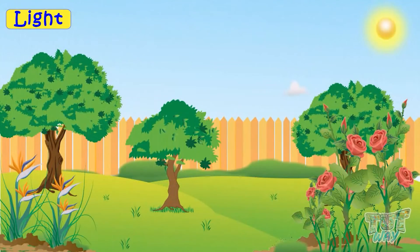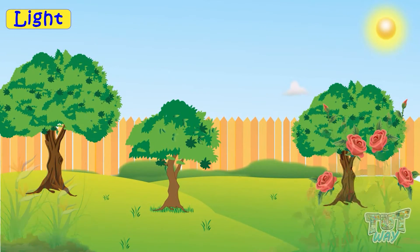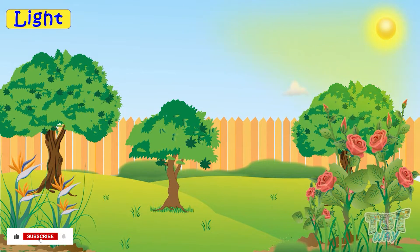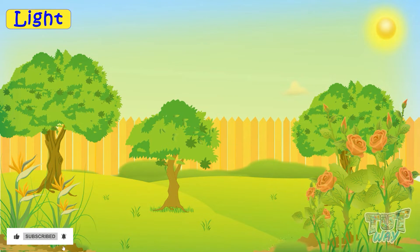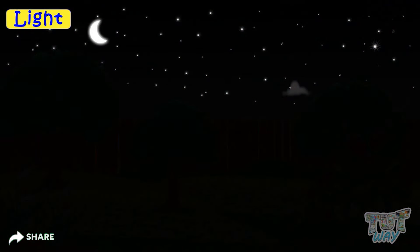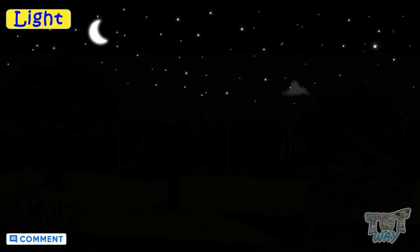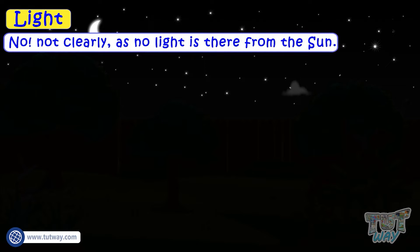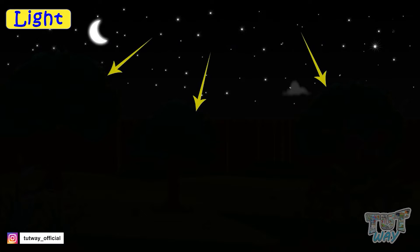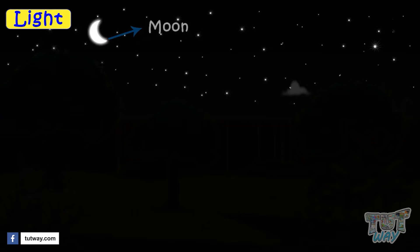Here is a park. We can see different plants, trees, and flowers because light from the sun is falling on these things. Now it's night time. Can you see any plants, trees, or flowers? No, not clearly, as no light from the sun is there. We can see the shape of plants and trees because there is still some light falling on them from the moon, which is not enough to see everything clearly.